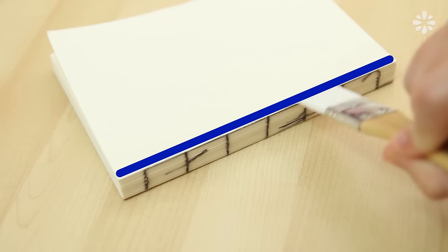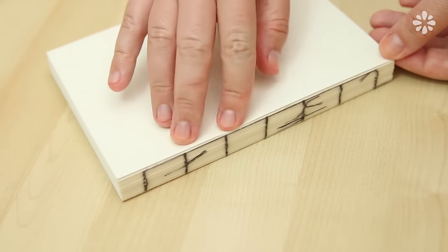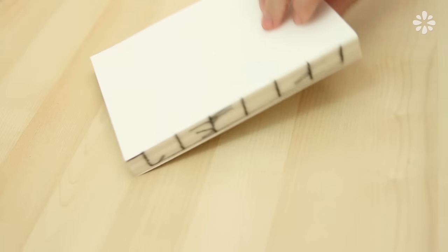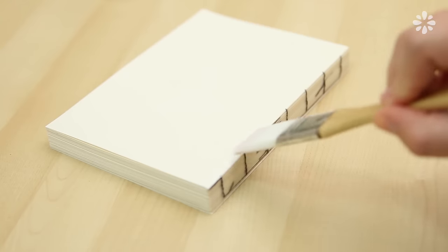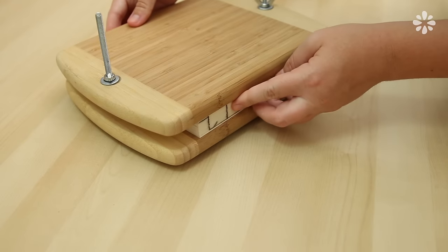And then you can apply the end pages. Brush about a quarter of an inch line of PVA glue near the spine. Align the folded edge of the end page to the spine and glue it down. Turn over the text block and repeat that same process on the other side with the other end page. You can place it in a book press to let it dry.